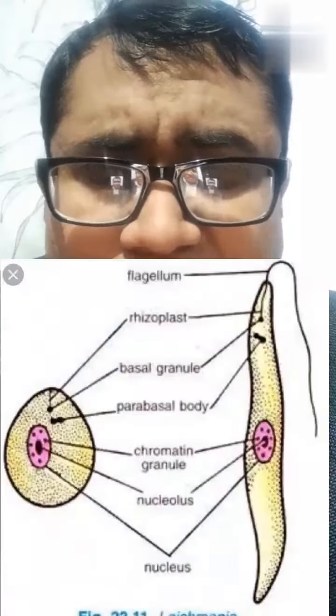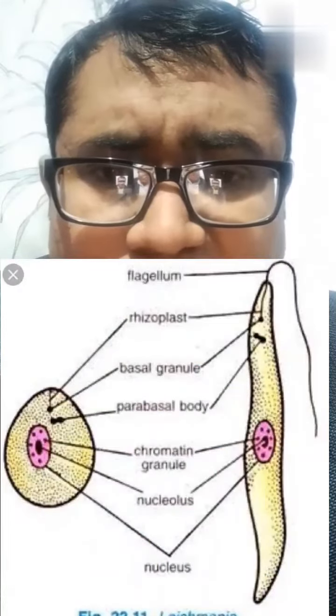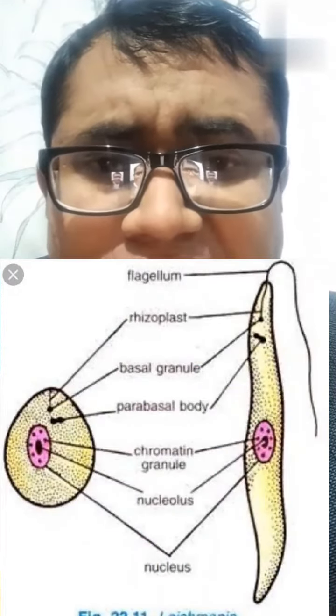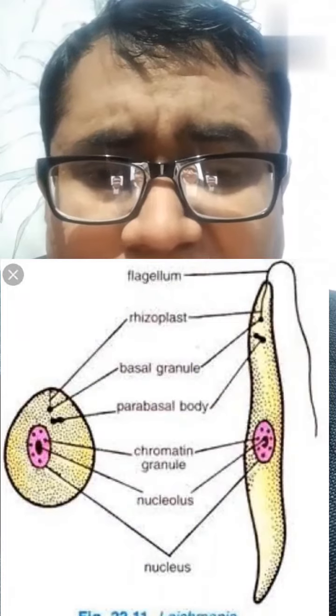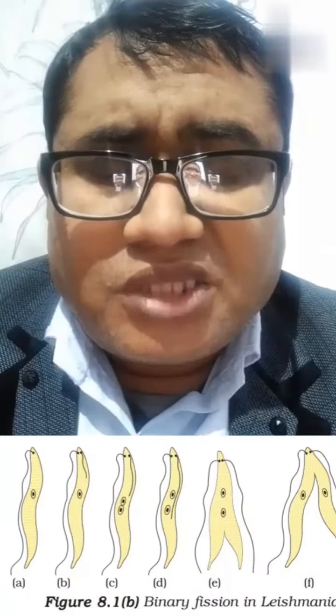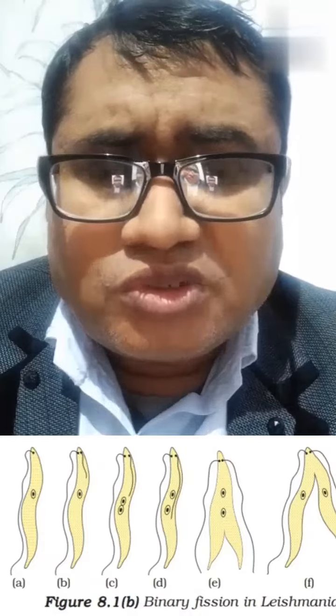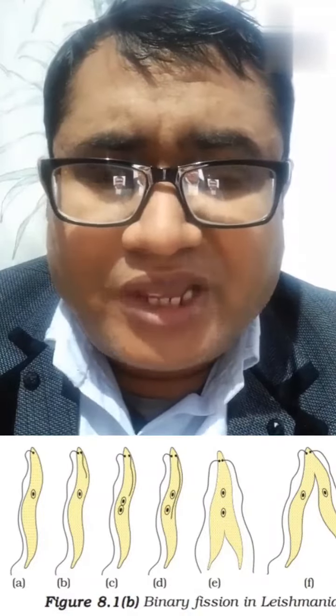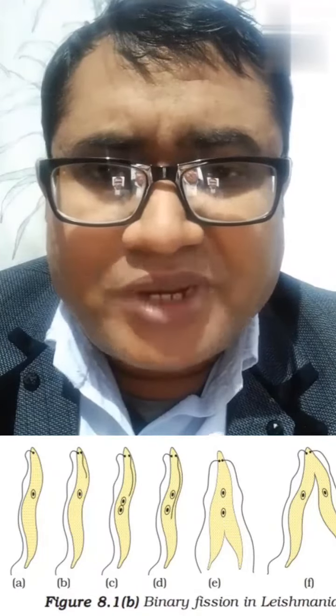This is an important reproduction type. In this method the organism splits into two — first the nucleus divides into two parts, and then the cytoplasm also splits into two parts, forming a new organism.